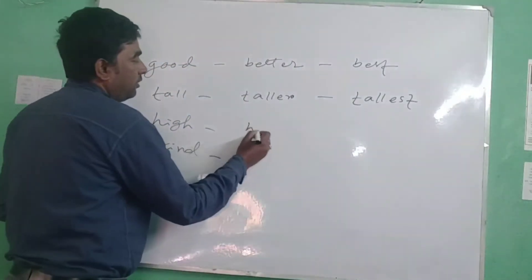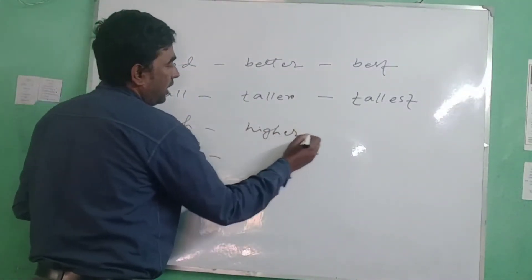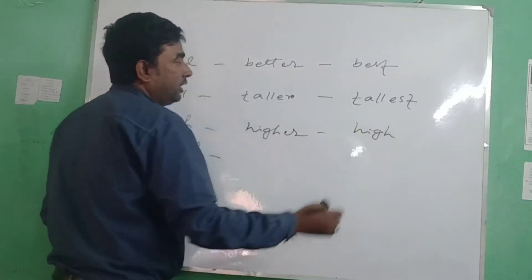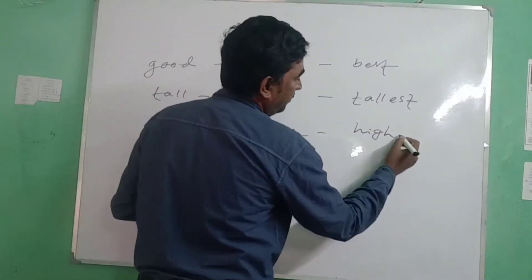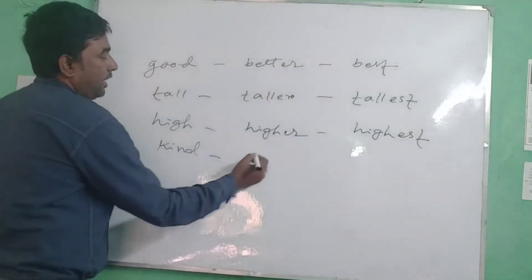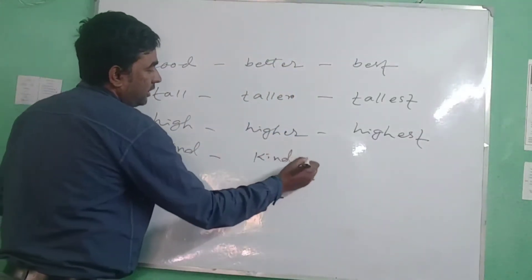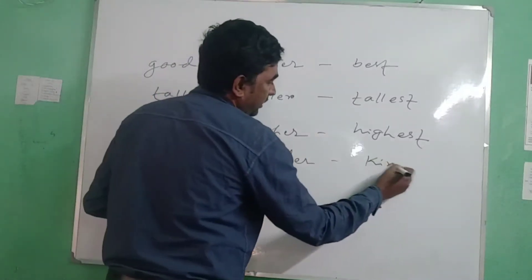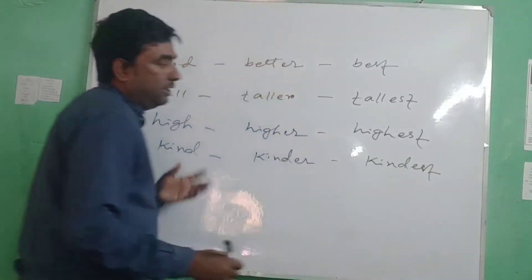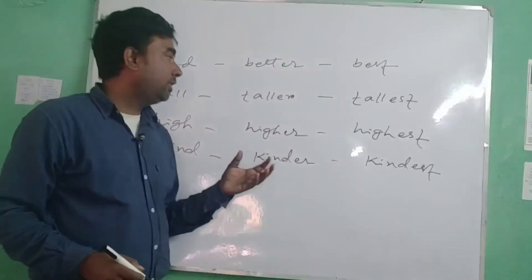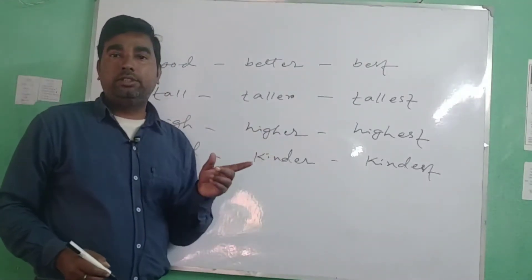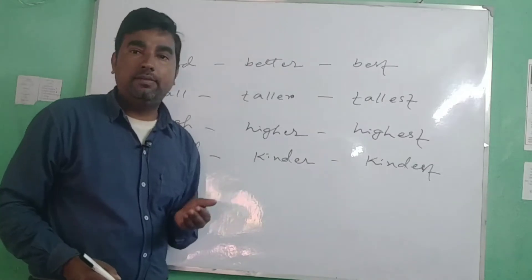Similarly, 'high' would be 'higher' in comparative degree, and 'highest' in superlative degree. 'Kind' would be 'kinder' and 'kindest.' But there is a little difference between these words and the words which have more than one syllable.